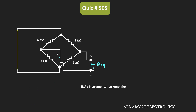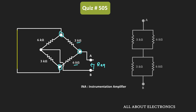Now, if you observe at node A, this 3 kilo ohm resistor and the 6 kilo ohm resistor are connected at one end. If we see the other end, then through this short circuit they are also connected together. So we can say that this 3 kilo ohm resistor and this 6 kilo ohm resistor are connected in parallel, and equivalently it will look like this.